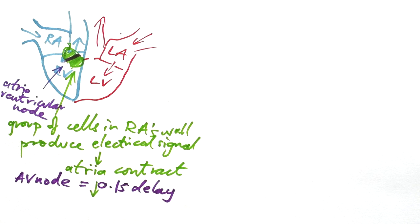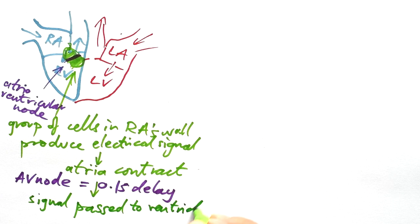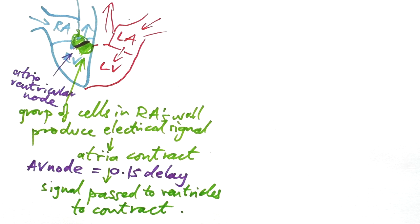The atrioventricular node, we can call that the AV node, produces about a 0.1 second delay. So it delays the signal from going to the ventricles. The signal is then passed to the ventricles and they contract. That is mind-blowingly clever stuff.